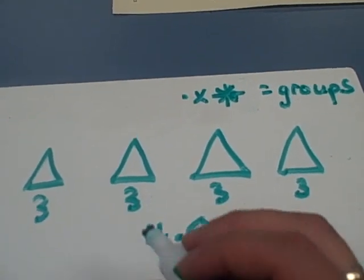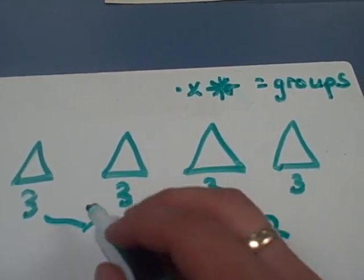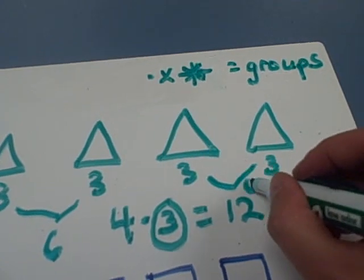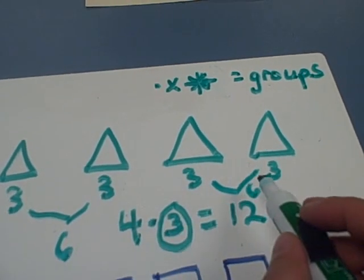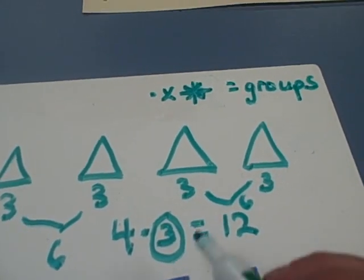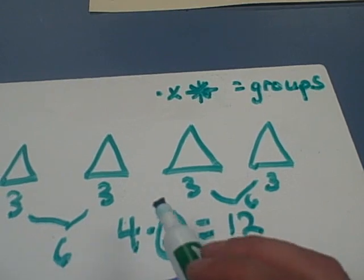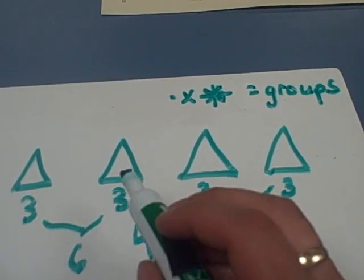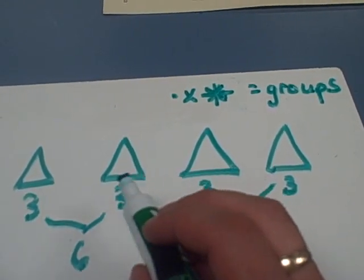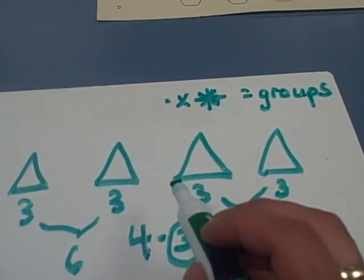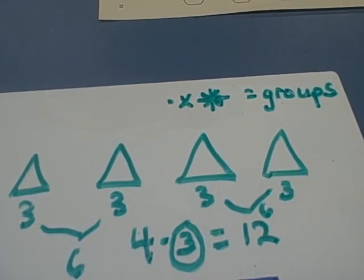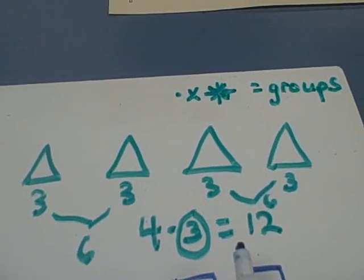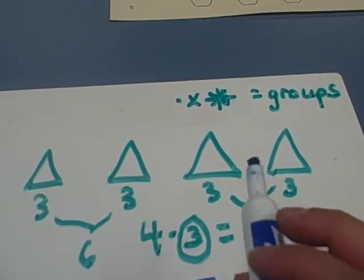Or I could do it this way: three plus three equals six, and then six plus six also equals twelve. And if I don't know how to get my doubles, then I can just count: three, four, five, six, seven, eight, nine, ten, eleven, twelve. That's your multiplication equation for this picture.